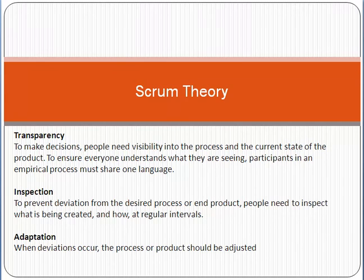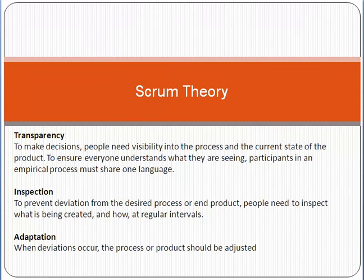Adaptation means that whenever deviation occurs, the process or product should be adjusted. Initially the customer may need something, but after receiving feedback, the customer may need changes in the process or product. Adaptation is very important in the scrum framework — we must adjust the process according to customer needs and feedback. Things should be flexible and adaptable, not rigid.